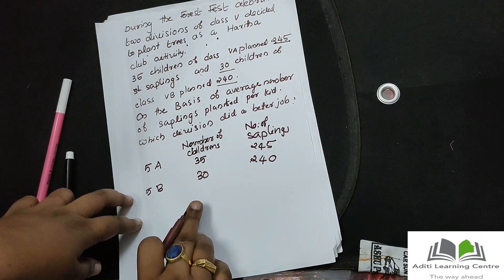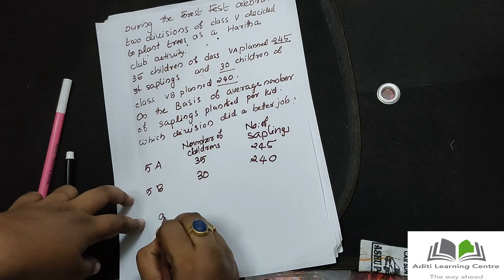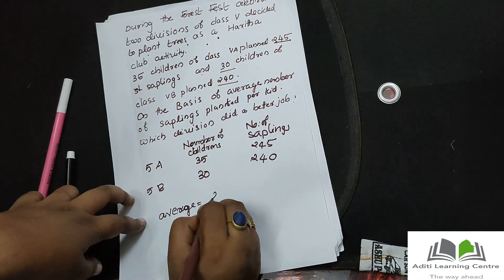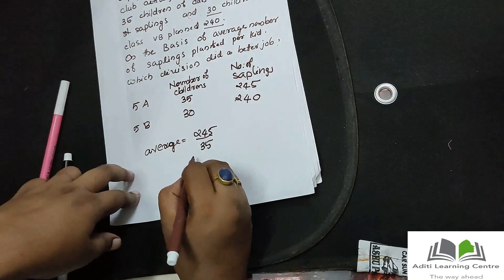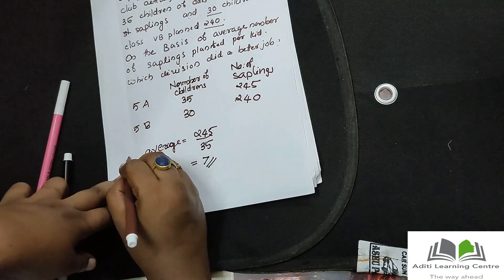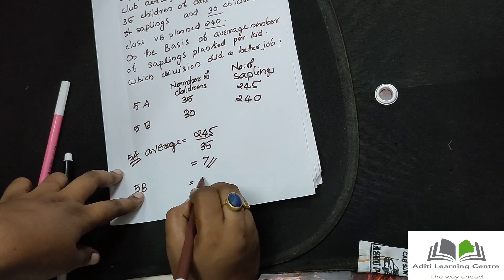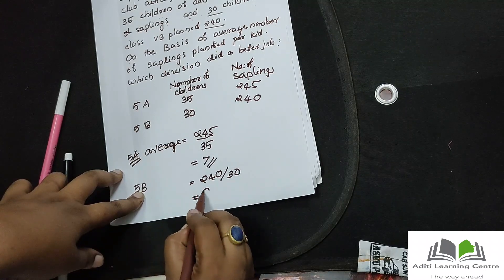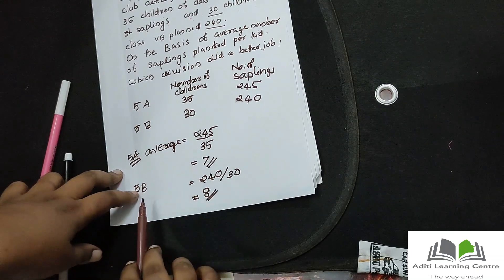Let's do the average and write which is better. Average for 5A equals 245 divided by 35. The answer is 7. Average for 5B equals 240 divided by 30. The answer is 8. So 5B did a better job.